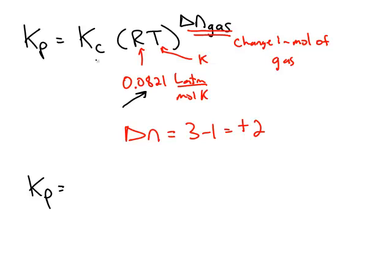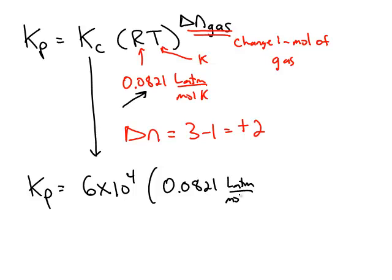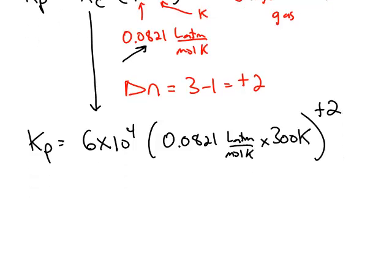For example, let's say that Kc was known to be 6 times 10 to the fourth. The gas constant R is 0.0821, and let's say our temperature is around room temperature, 300 Kelvin. We raise just the part in the parenthesis to the second power, and we get a value of Kp of 3.6 times 10 to the seventh.